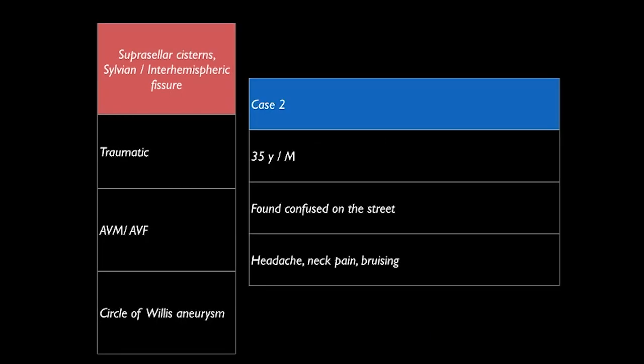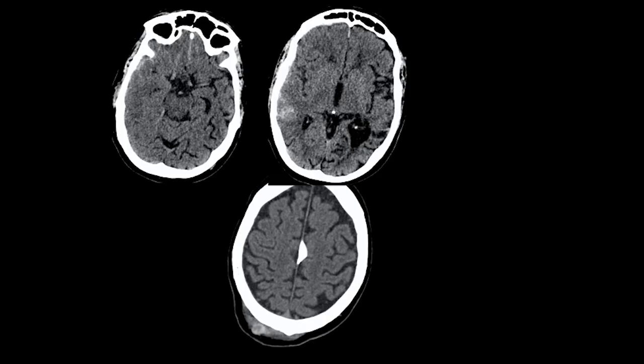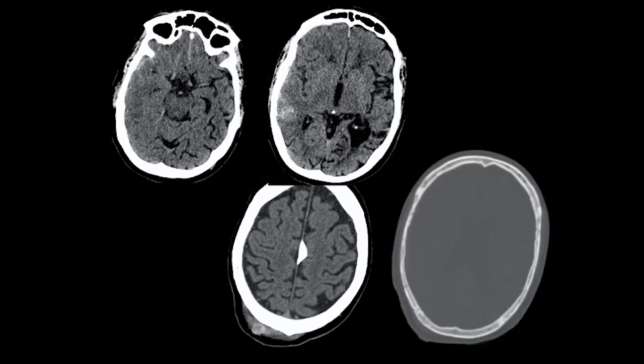Case two: a 35-year-old male found confused on a Saturday morning, with headache, neck pain, and some bruising on the face. CT head showed subarachnoid blood along the temporal convexity, possible parenchymal blood, and bleed within the base of the frontal lobes bilaterally. Additional images revealed a contusion in the right parietal region and a parietal bone fracture — a typical example of traumatic subarachnoid hemorrhage.